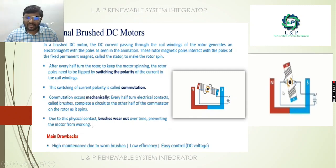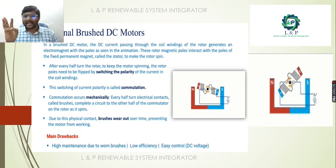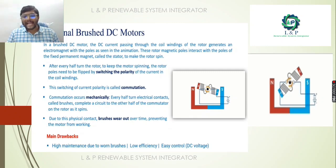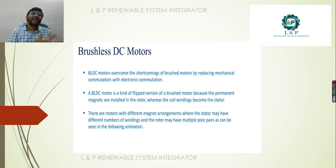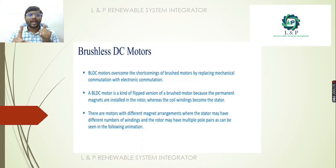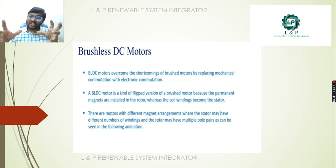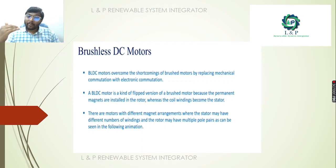Because of this physical contact, there is a possibility for brush wear in the brushed DC motor. It has very low efficiency, although control is easy since we are using DC voltages. With a brushless DC motor, the shortcomings of the brushed DC motor are overcome — it requires virtually no maintenance. It also has different magnetic arrangements where the stator may have different numbers of windings and the rotor may have multiple pole pairs.